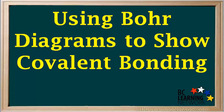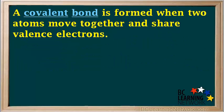This video shows you how Bohr diagrams can be used to illustrate how atoms bond together with covalent bonds. A covalent bond is formed when two atoms move together and share valence electrons.